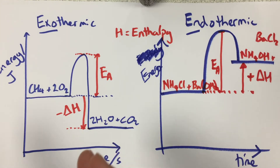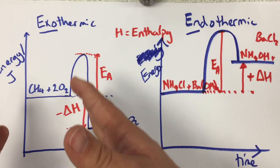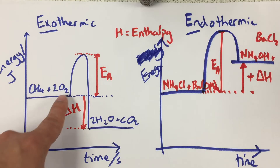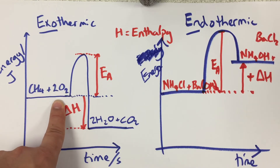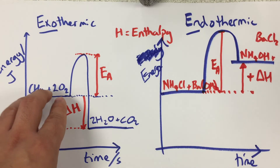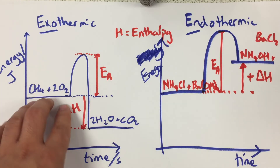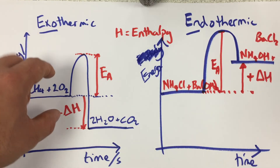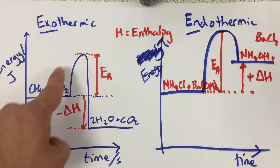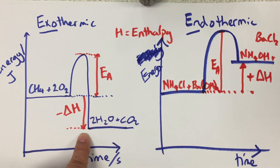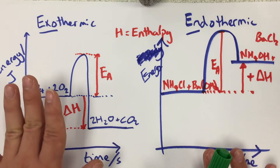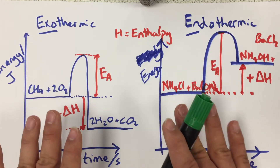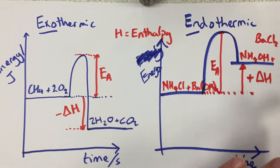The reason a reaction is either endo or exothermic comes back to energy stored in bonds. When a chemical reaction happens, we start with our reactants; the bonds are broken, and then energy is released when new bonds are made. Whether it's overall exothermic depends on whether more energy is required to break the bonds in the first place or to make new ones.